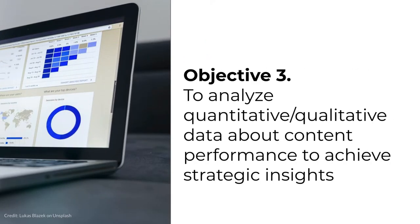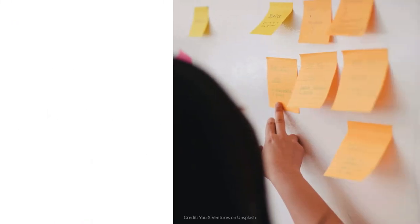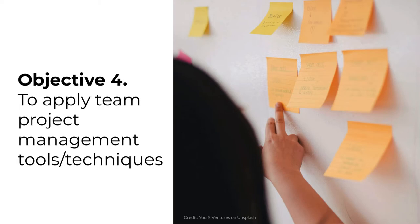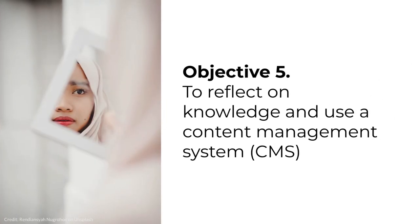The third objective is for you to achieve strategic insights from analyzing data collected about content performance. The fourth objective is for you to apply project management tools and techniques like charters, work breakdown structures, Kanban, Trello, status updates, and peer review — all during a team content strategy project. You'll be assigned to a team before Module 2 begins. Objective five is for you to reflect on content strategy knowledge and skill development through written blog posts in a content management system or CMS like WordPress. This begins right away in Module 1.